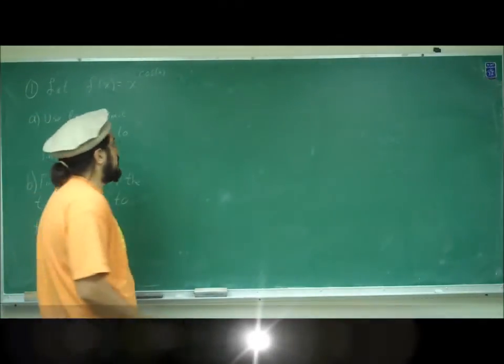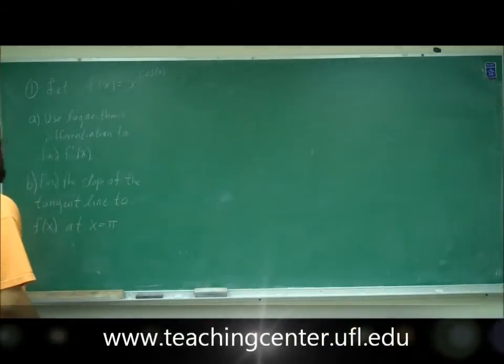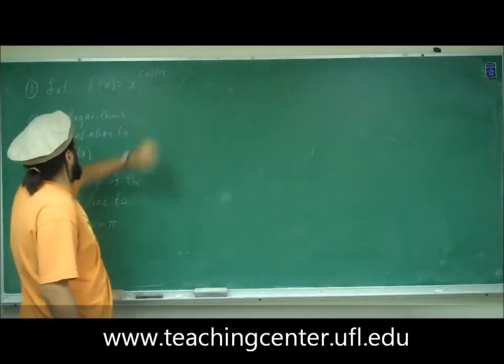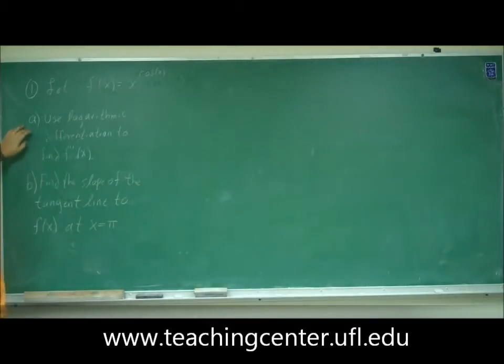This is problem one of the tear-off. Problem one reads: let f(x) be x to the cosine x. They want you to use logarithmic differentiation to find f prime of x. Part b wants you to find the slope of the tangent line to f(x) at x equals pi. In order to do b, we need to do part a. Once we have part a, all we need to do is plug in pi for x and we'll get our slope m.